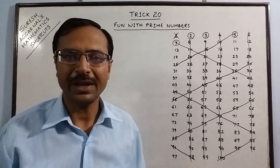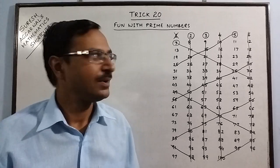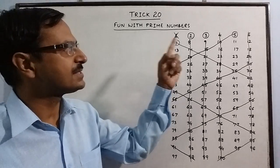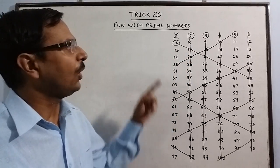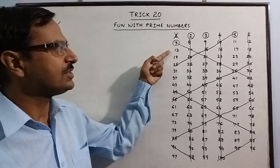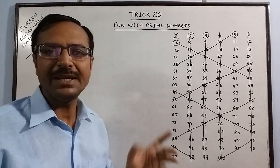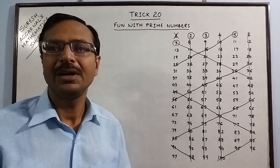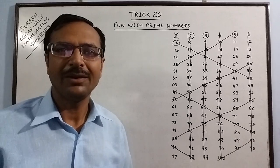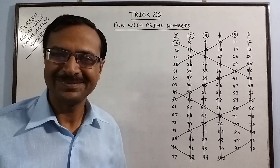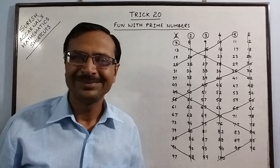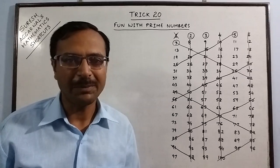This is how we arrive at the prime numbers. All numbers which are encircled, all numbers which are remaining. These are the 25 prime numbers between 1 and 100. Isn't that simple? And it's so easy to spot the prime numbers.